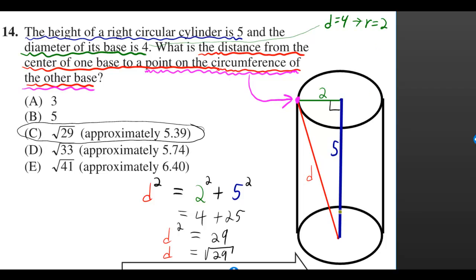What they want to know is the distance from the center of one base to a point on the circumference of the other base. And no matter where you put the radius and the height, you'll always have a right angle between the radius and the height.